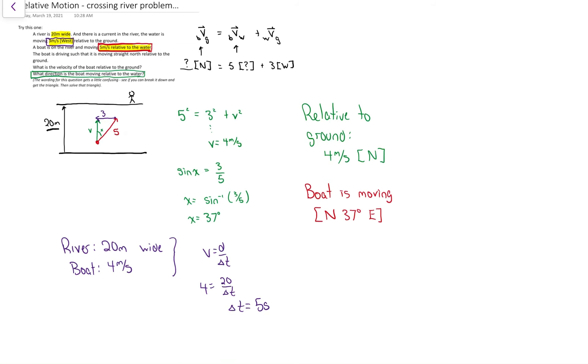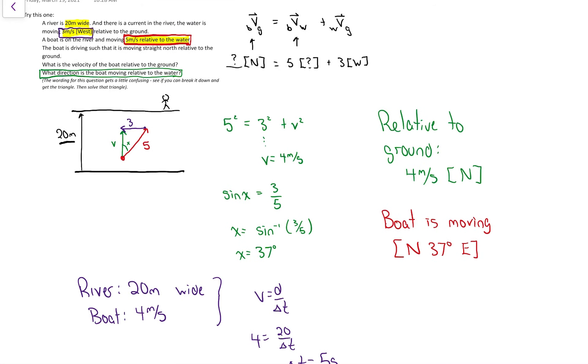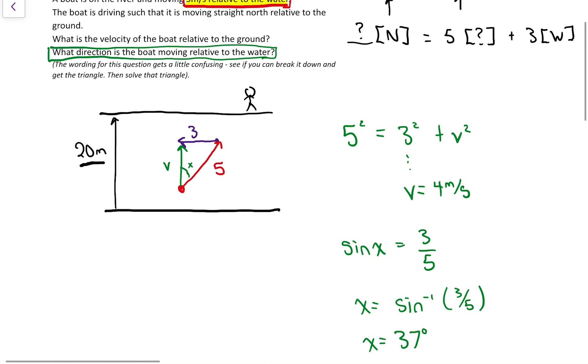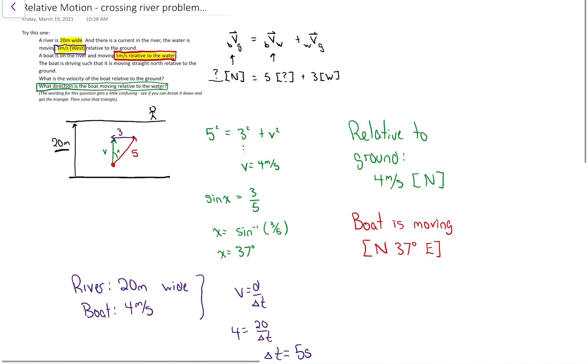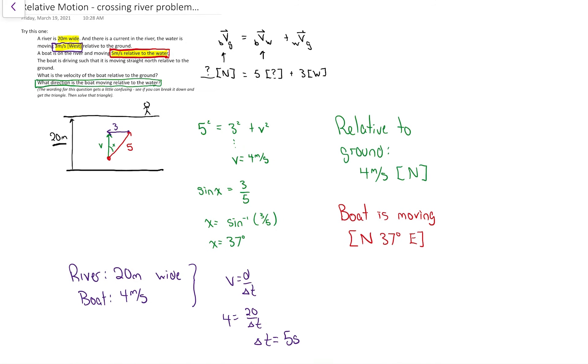So just to recap, I knew the water was pushing it to the west at three. I knew the boat was moving through the water at five, but I didn't know what exact direction, but I knew it had to angle to the east to sort of cancel out that current so that from the ground, the boat looked like it was going straight north. I knew that that final velocity, the one I drew in green, had to be pointed straight north. I just didn't know how long it was. That's what made this such a trickier question, figuring out how these vectors all connect together.